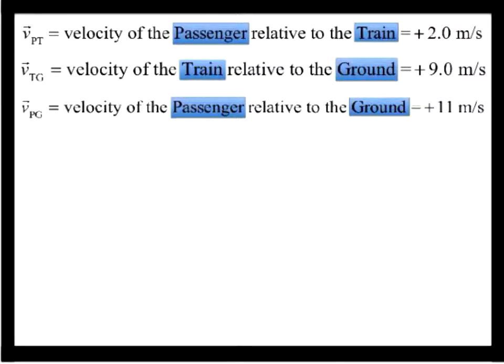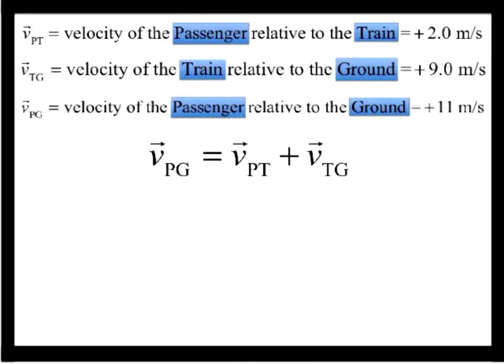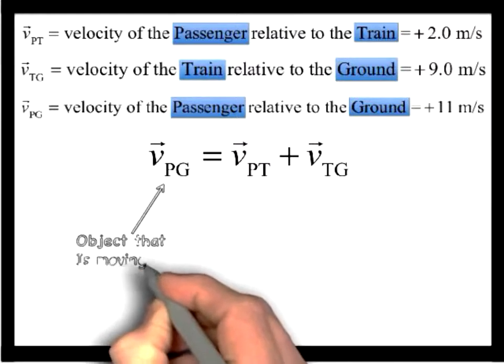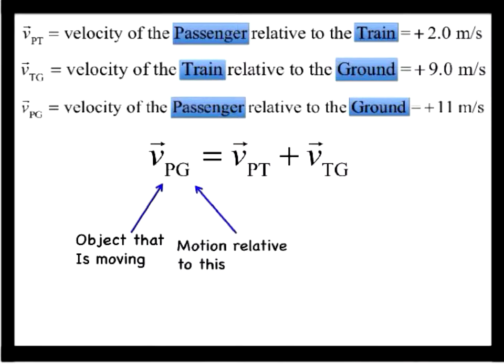In terms of the symbols, the following vector equation must be true. The velocity of the passenger relative to ground must be equal to the velocity of the passenger relative to the train plus the velocity of the train relative to the ground. Each velocity vector symbol contains a two-letter subscript. The first letter in the subscript refers to the object that is moving, and the second letter refers to the object relative to which the motion takes place.